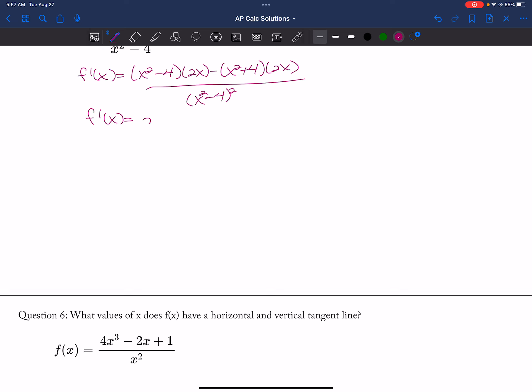So those go away, so I'll look for the negative 16x over x squared minus 4, the quantity squared. So then negative 16x is equal to 0, so this will give me horizontal tangent.